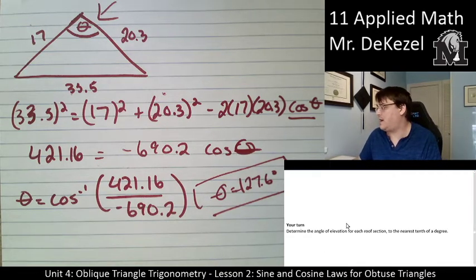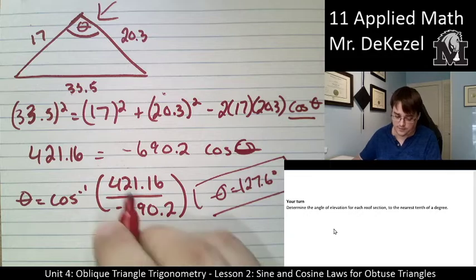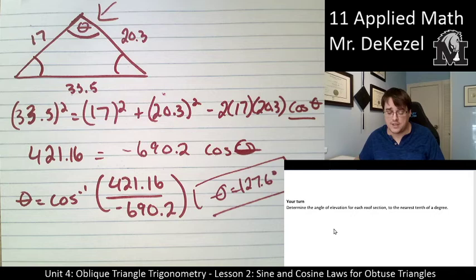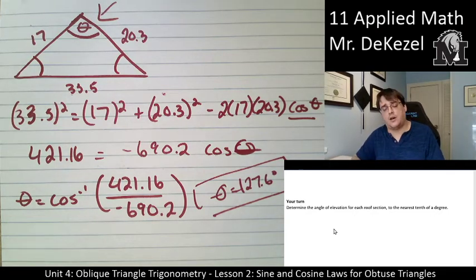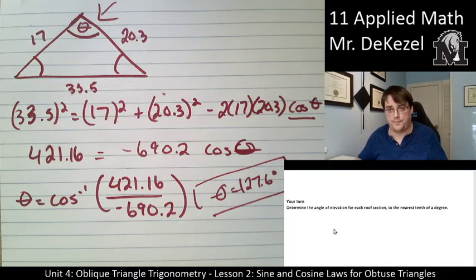Next part is your turn. So what it wants you to do here is determine the angle of elevation for each roof section. It wants you to find angle B and angle A. So pause it here. Find out what those angles are using cosine law, sine law, or the 180 degree rule. And unpause when you're done. And we'll see if you got it right.